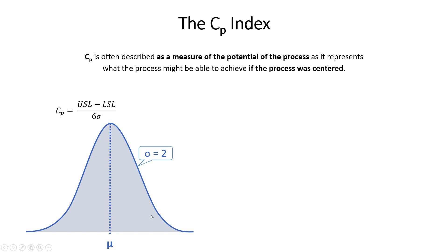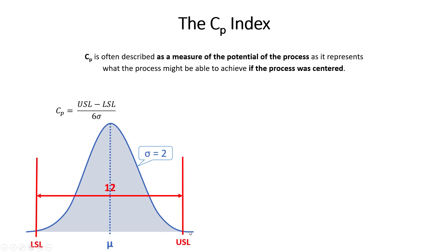Let's take an example. The standard deviation of our process is 2, and the CP calculation is the upper spec limit minus the lower spec limit divided by 6 sigma. The specification width is 12, so CP equals 12 divided by 6 times 2, which gives a CP value of 1. You can see there is a small portion of the distribution outside the specification limits that would be nonconforming.